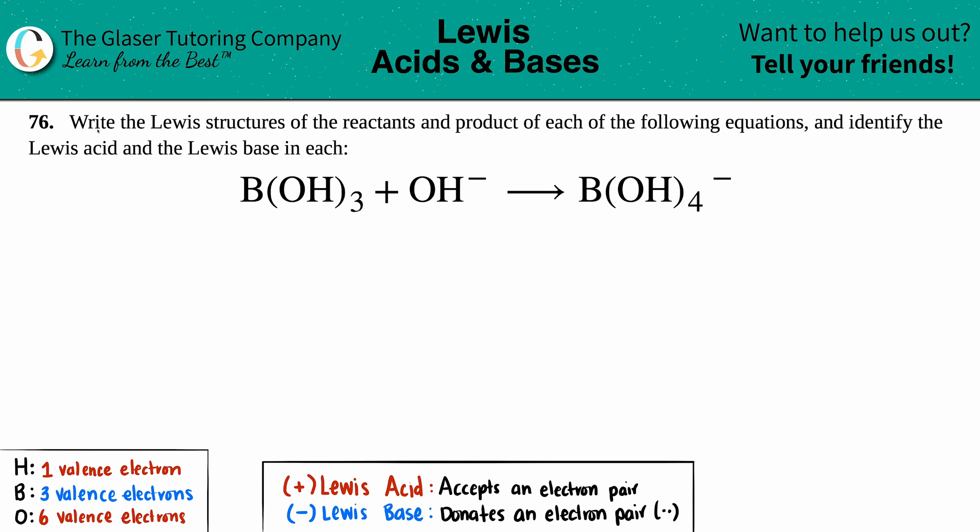Number 76: Write the Lewis structures of the reactants and the product of each of the following equations, and identify the Lewis acid and the Lewis base in each. We have this reaction right here: B(OH)₃ + OH⁻ gives us B(OH)₄⁻.